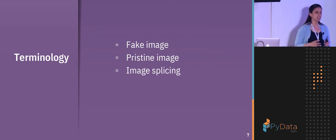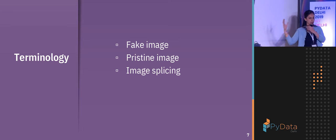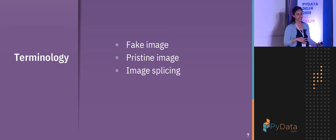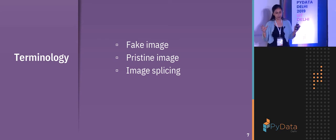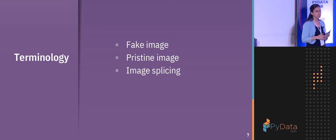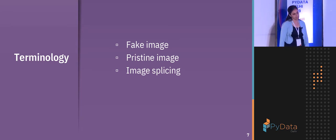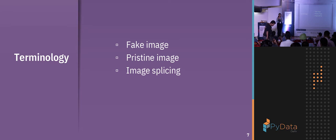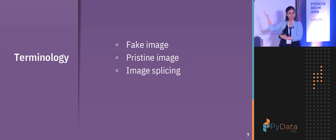Here are some common terminologies: a fake image means you have copied some object from another image and pasted it in. Pristine images are images where we have not modified any object, but we have resized or changed the brightness — some sort of processing — which gives wrong information. Then we have image splicing. There are two types: copy-move, where we pick an object from one image and paste it within the same image; and image splicing, where we crop an object from another image and paste it in.